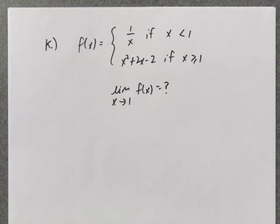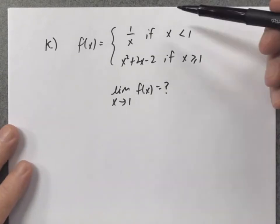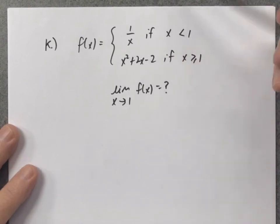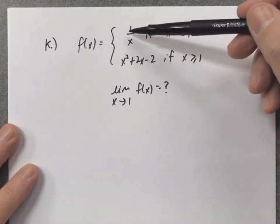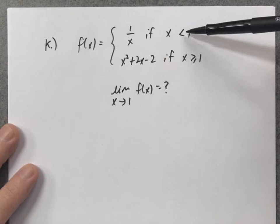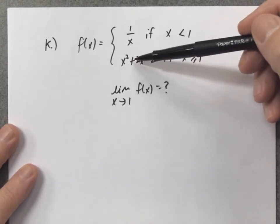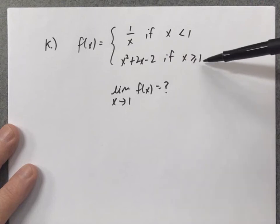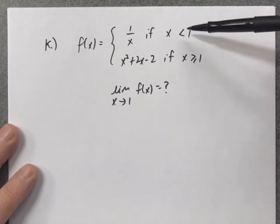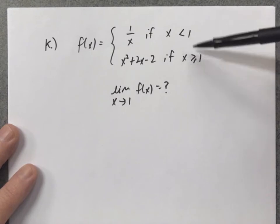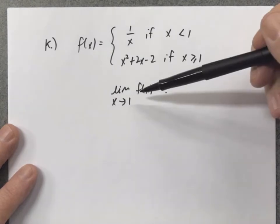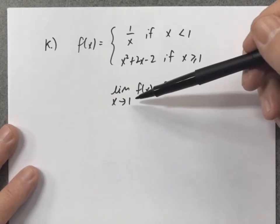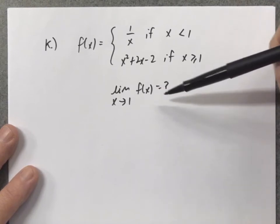We're ready now for the very last problem for these limits. This is a piecewise function where f of x equals 1 over x if x is less than 1, and f of x equals x squared plus 2x minus 2 if x is greater than or equal to 1. The transition point where the function changes is when x equals 1, and we're asked to find the limit as x approaches 1 of f of x.